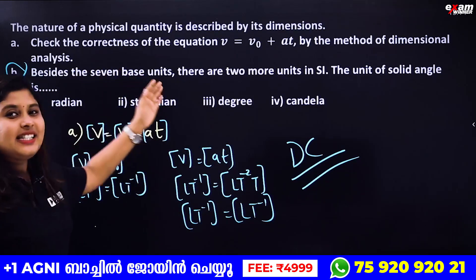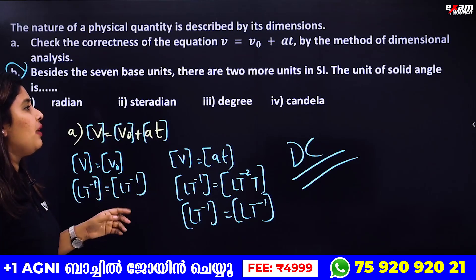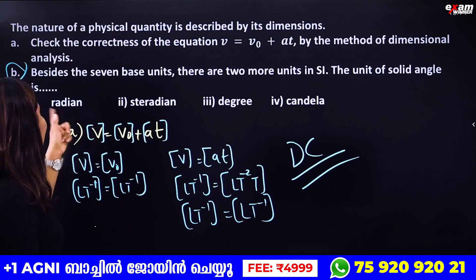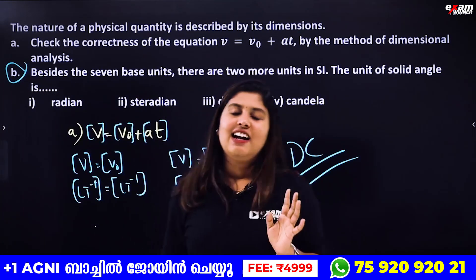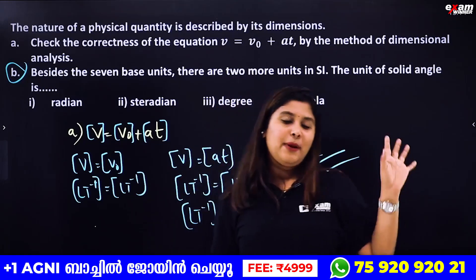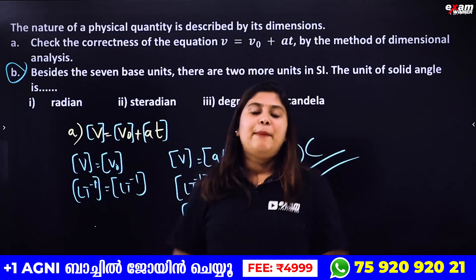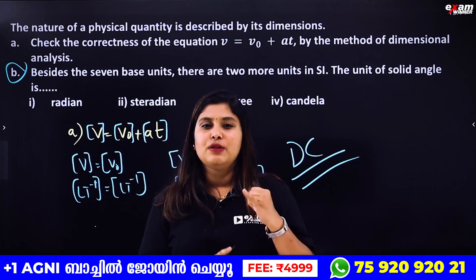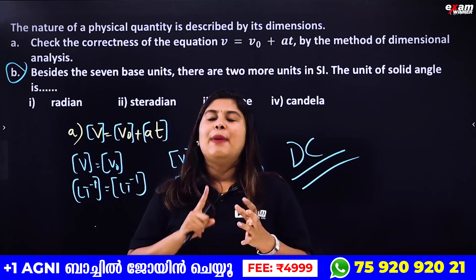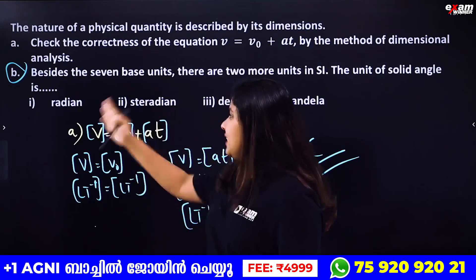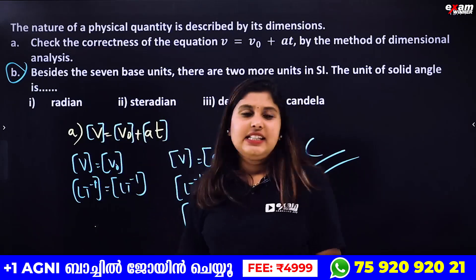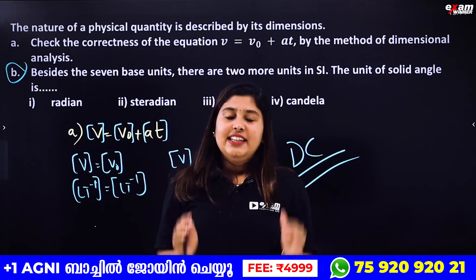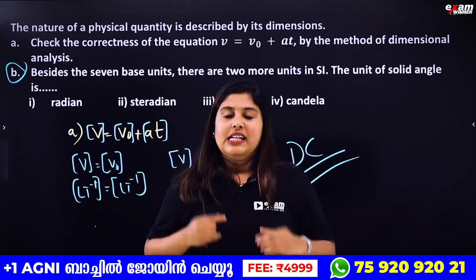Besides the seven basic SI units, there are two supplementary SI units: solid angle and plane angle. The unit of plane angle is radian, and the unit of solid angle is steradian. These are important to remember for the exam.